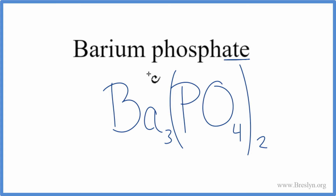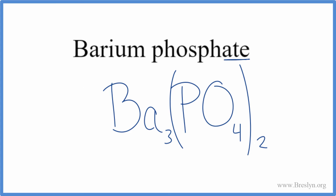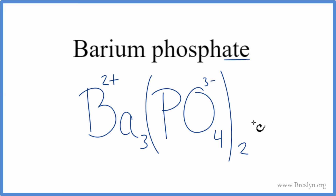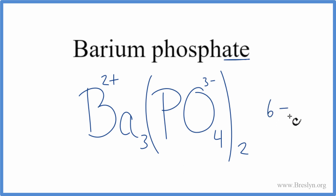Let's check our work to make sure we got that right. We said barium had a 2+ ionic charge, looking at the periodic table. Phosphate had a 3−. We have two phosphate ions, each one 3−, so 2 times 3− equals 6−.